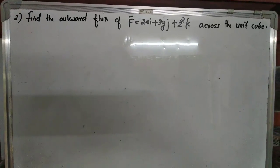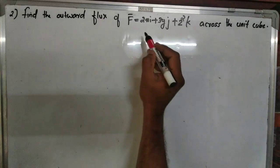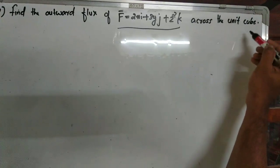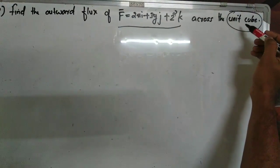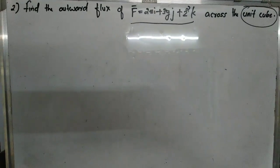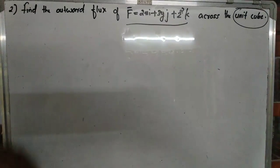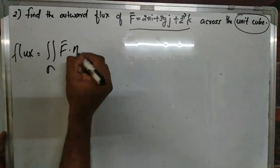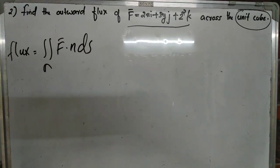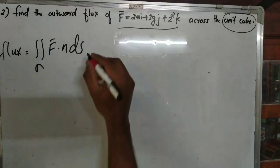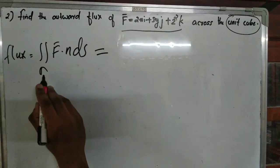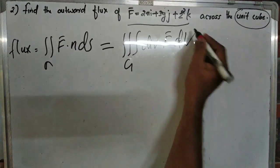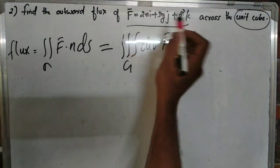Our second question from divergence theorem: find the outward flux of F = 2xi + 3yj + z²k across the unit cube, where the solid G is the unit cube. As usual, flux equals the double integral over sigma of F·n dS. We will use the divergence theorem, so by divergence theorem, the double integral over sigma of F·n dS equals the triple integral over G of div(F) dV.